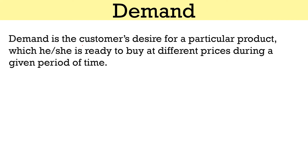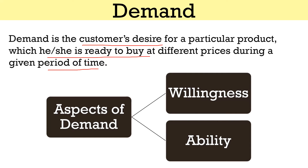Demand for a commodity refers to the customer's desire for a particular product which he or she is ready to buy at different prices during a given period of time. Here we have two aspects of demand: one is the ability of the person, which represents the purchasing power of the customer, and along with that, the willingness to spend money to buy that commodity.